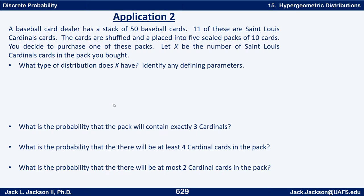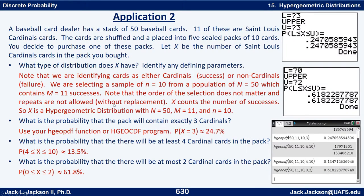For these probabilities we use our hypergeometric function or program with N=50, M=11, and n=10. We use our HGO CDF program. For P(X=3), it asks for population size: enter 50. Number of successes in the population: enter 11. Sample size: 10. Lower and upper are both 3, since 3 to 3 inclusive is just 3. That probability is about 0.247, or about 24.7 percent.